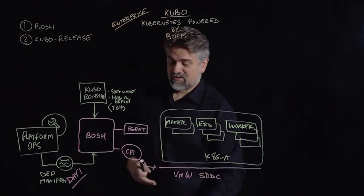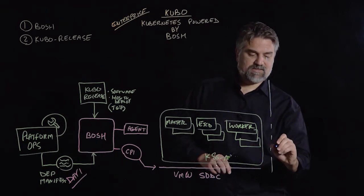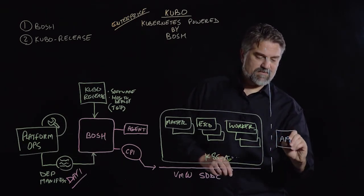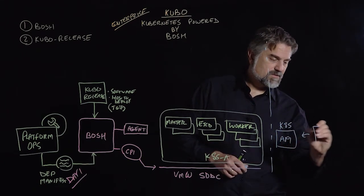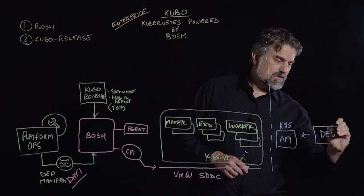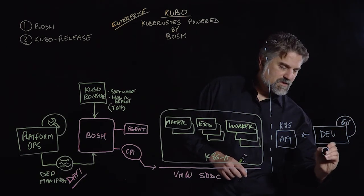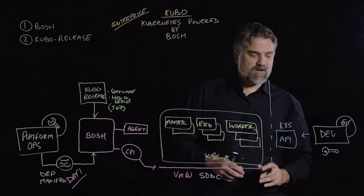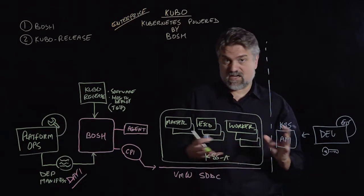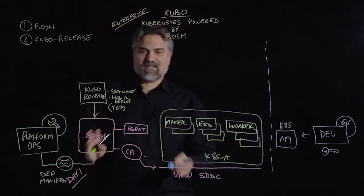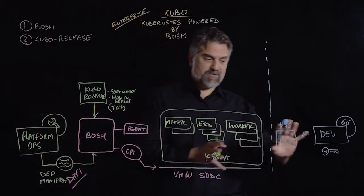In the end, we're doing all this so that we can give developers access to container platforms to run their applications. We're going to have a fully native K8s API that's going to be accessible by the developer we want to entitle. We're going to give that developer keys to the environment after deployment, so they or their team can interact with their Kubernetes cluster in a native manner. That's a good day one story for what BOSH can give the enterprise platform operator to deploy Kubernetes at scale.